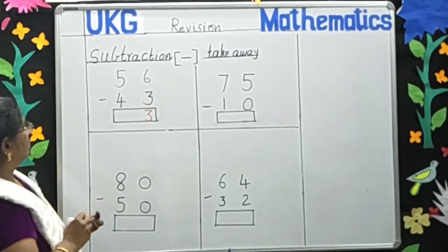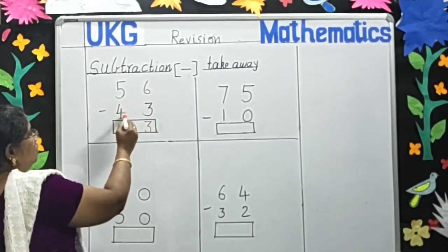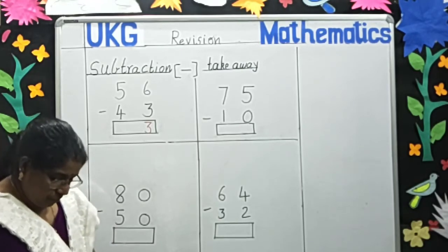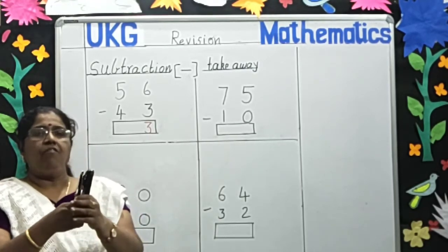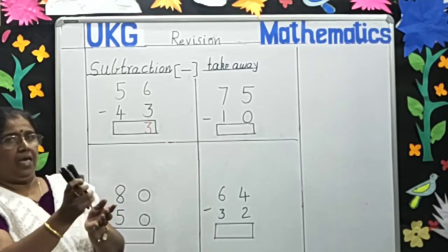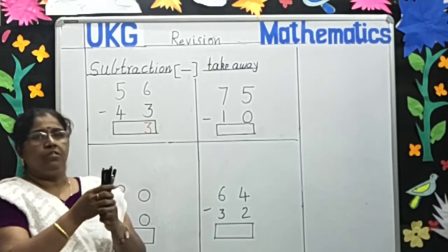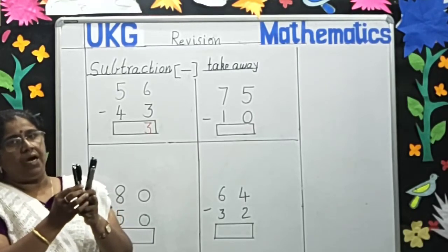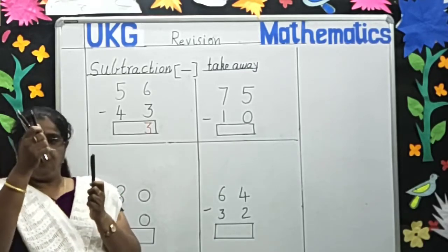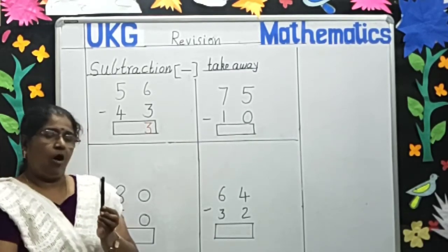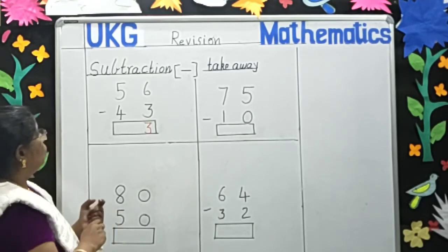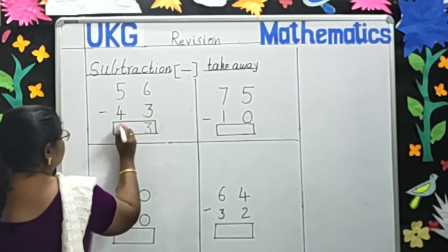Now next. This is 5, this is 4. I have 5 pens in my hand. 4 pens I gave to my sister. 1, 2, 3, 4. Now how many pens I have children? I have only 1 pen. So we will write 5 minus 4 is 1.